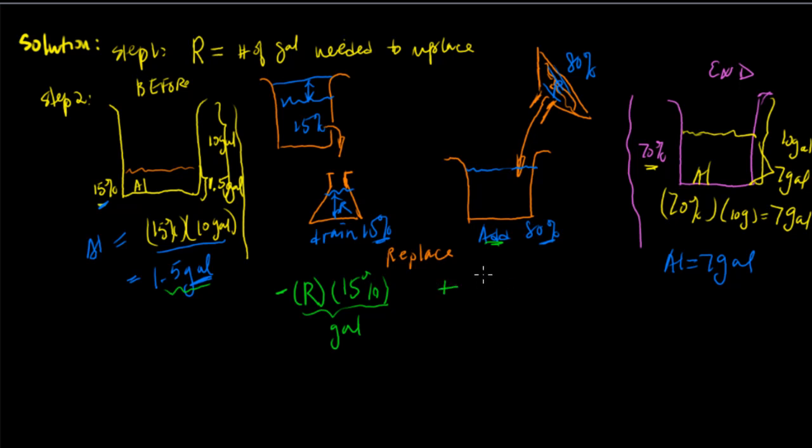We added 80% of solution. What's the total amount? R amount. And we end up with 7 gallons here. So the overall equation is 1.5 gallons minus this chunk that we drained, and then we added it with something else, and then we ended it with 7 gallons.